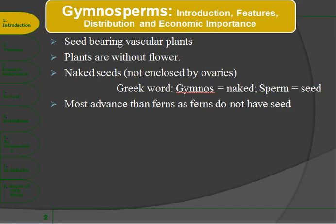Bismillahirrahmanirrahim. The introduction, features, distribution and economic importance of Gymnosperms. These are seed-bearing vascular plants and plants are without flowers. They produce seeds but the seeds are not enclosed in ovaries. The word gymnosperm is derived from the Greek word 'gymnos' meaning naked and 'sperm' meaning seed.